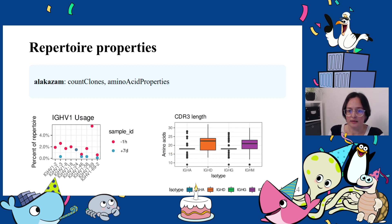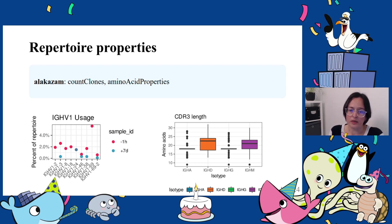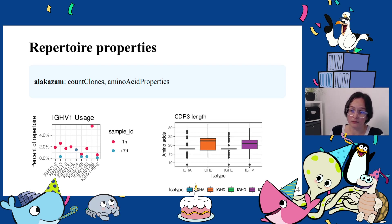The R package alakazam provides functions to analyze and visualize repertoire diversity and other features, such as biases in gene usage. We know that not all V, D, and J genes are used with the same frequency. The function amino acid properties in alakazam can be used to calculate several amino acid sequence physicochemical properties of the junction region. Remember that this is the most variable region of the antibody sequence and its properties are key contributors to antigen specificity.